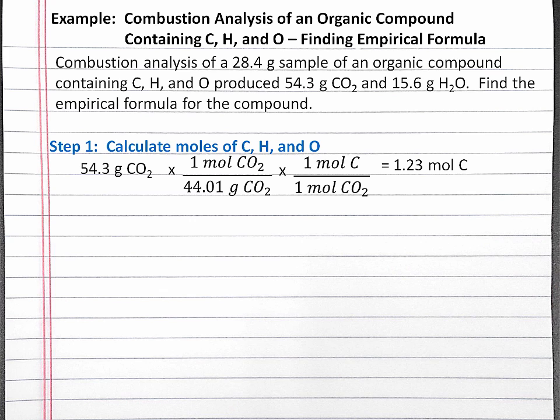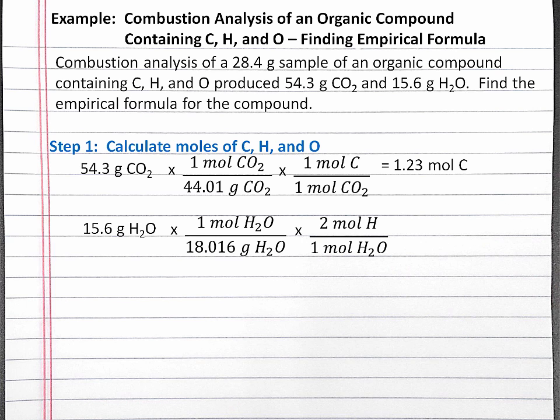We also make the assumption that all of the hydrogen in the organic compound gets incorporated into the H2O. So beginning with 15.6 grams of H2O, we can convert into moles of H2O using its molar mass, and into moles of hydrogen using the ratio from the chemical formula, and we'll get 1.73 moles of hydrogen in our sample.